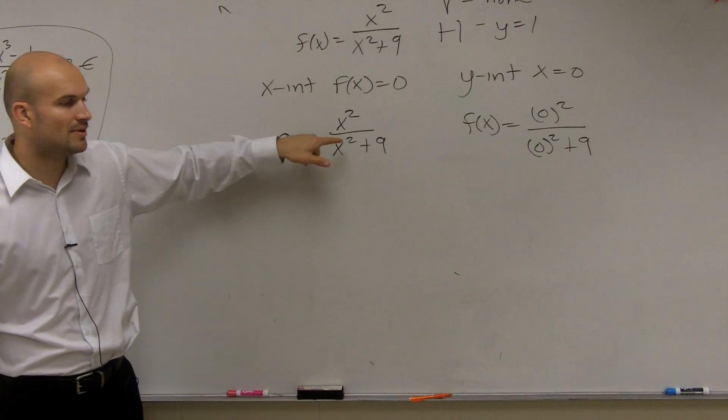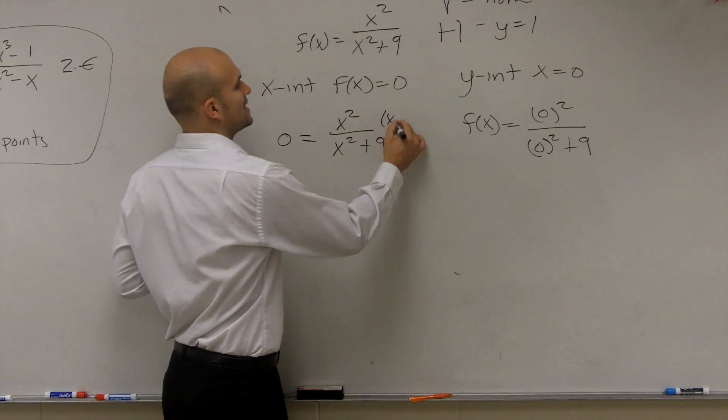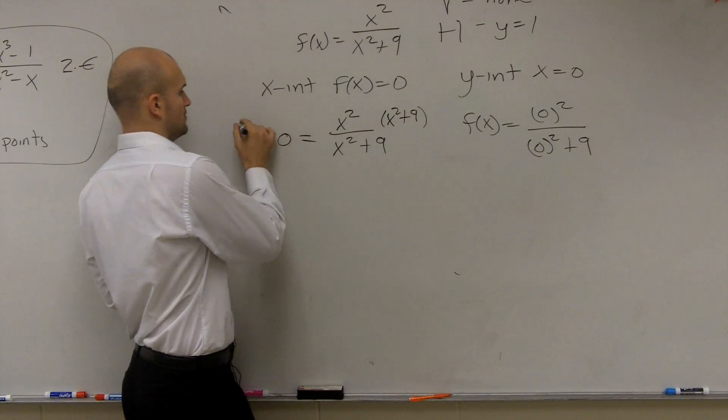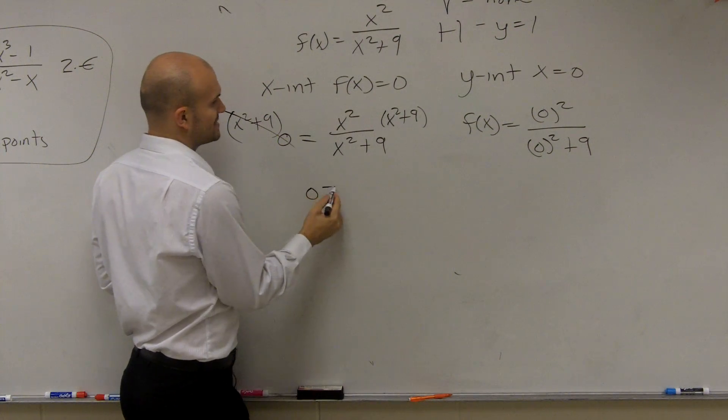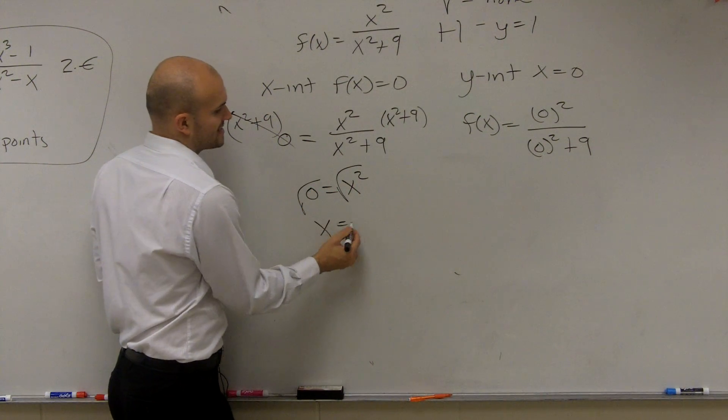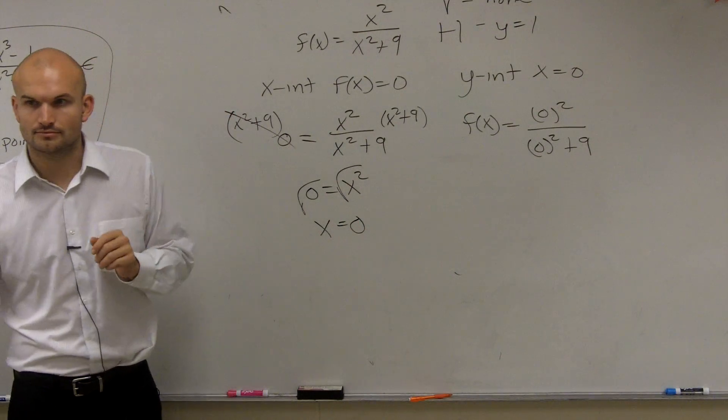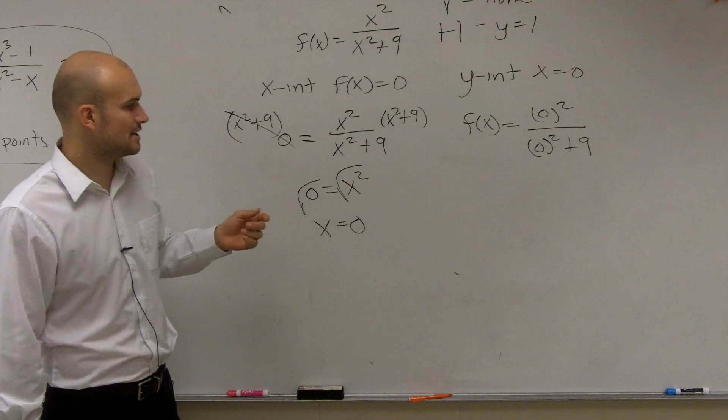So now we just need to evaluate. Remember, how do we get rid of a denominator when we have a fraction? Michael, we multiply by x squared plus 9. Therefore, we get 0 equals x squared. Take the root. x equals 0. Cool? So therefore, we can say the x-intercept is equal to 0.